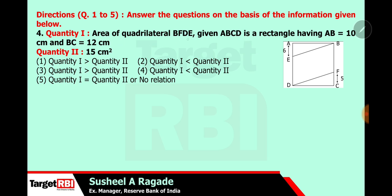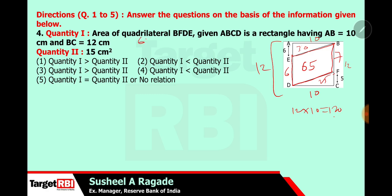In question 4, we find the area of quadrilateral BFDE. ABCD is a rectangle with AB = 10 and BC = 12. The relevant dimensions give a small triangle of area 30 and another of area 25, totaling 55. The overall rectangle area is 12 × 10 = 120, and 120 − 55 = 65. So the area of the quadrilateral is 65. Quantity 1 is 65 and quantity 2 is 15, so quantity 1 is greater. Answer is 1.